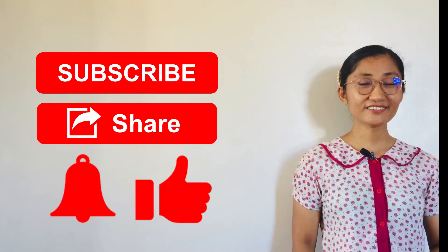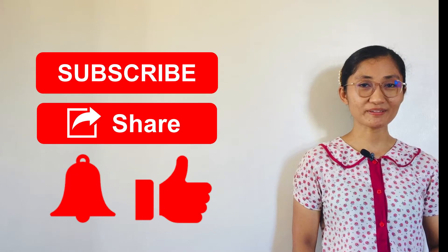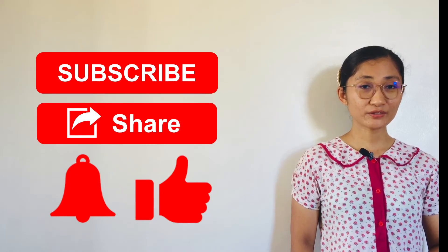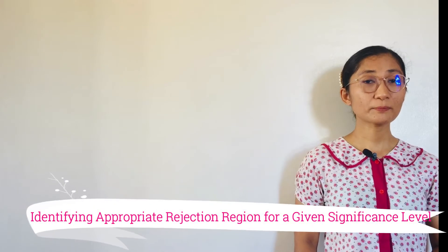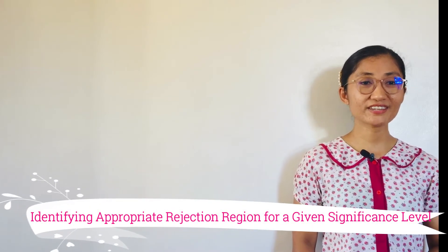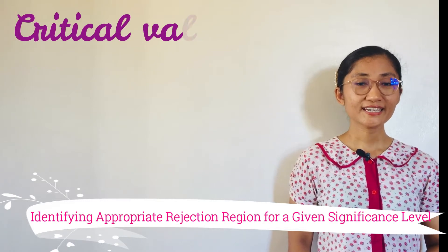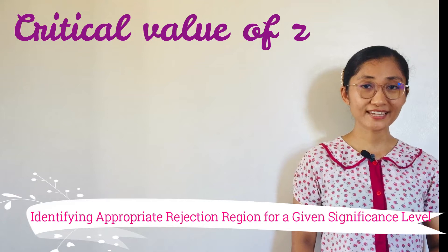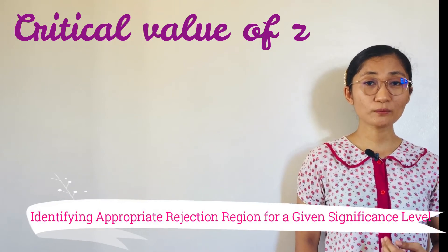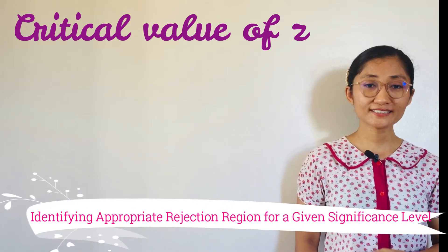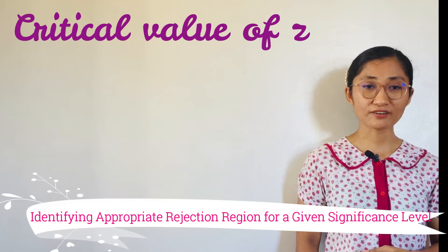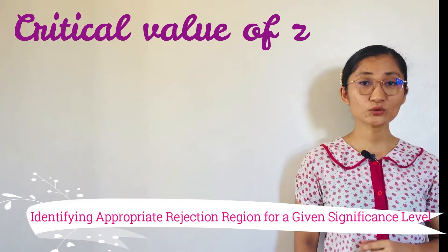Hello everyone, I'm teacher Neth, and welcome back to statistics and probability class. If in the previous lesson we learned how to determine the appropriate test statistic, in this lesson we will know how to determine the appropriate rejection region given a significance level. A critical value of Z, or Z-score, is a point or boundary on a test distribution that is compared to the computed test statistic in order to identify if the null hypothesis is to be rejected.